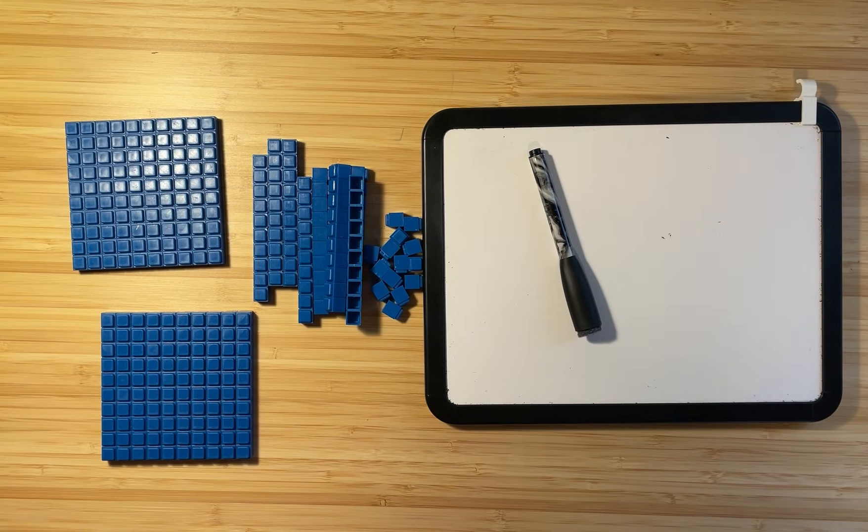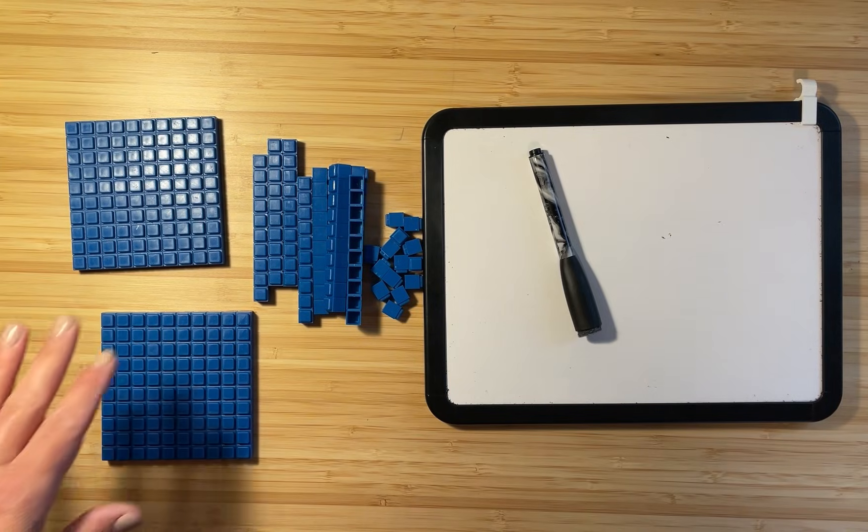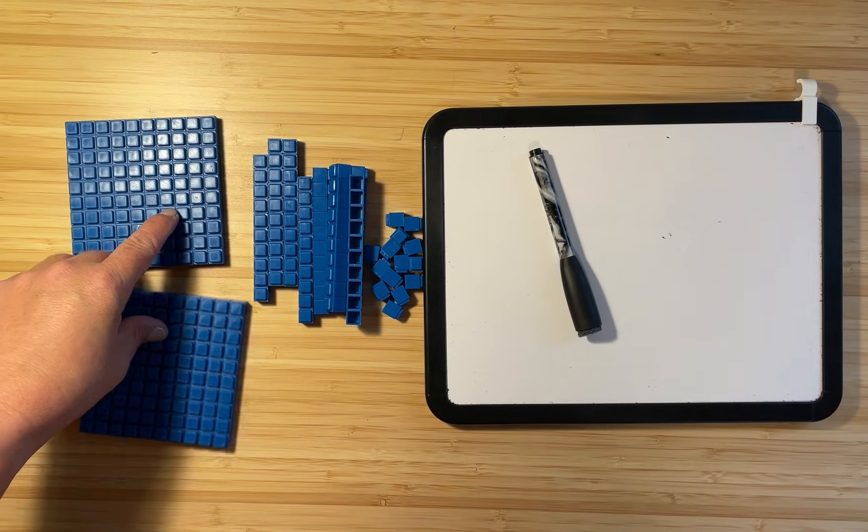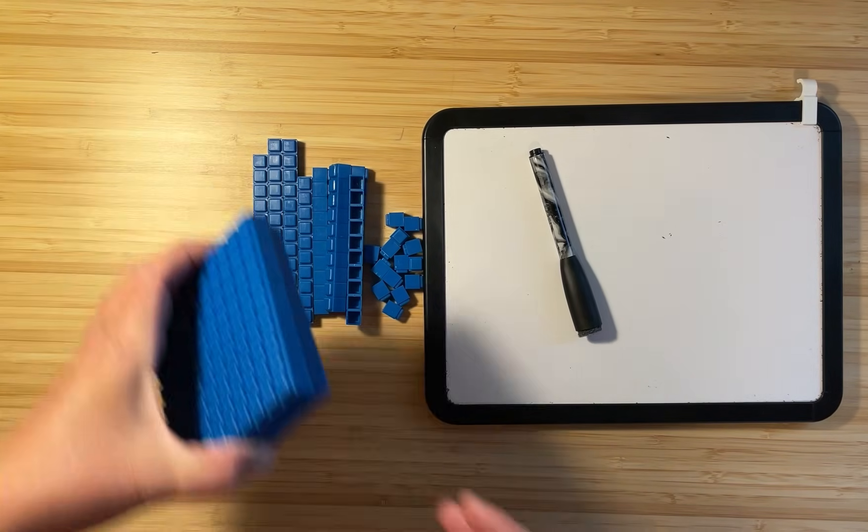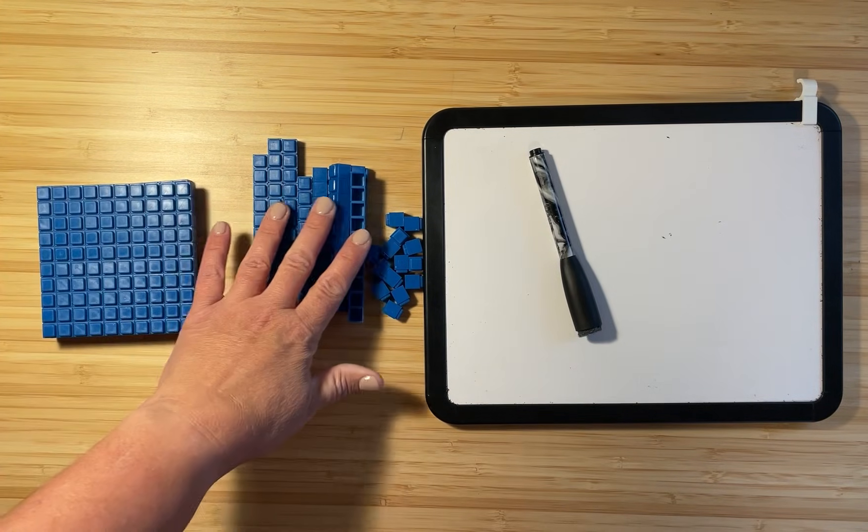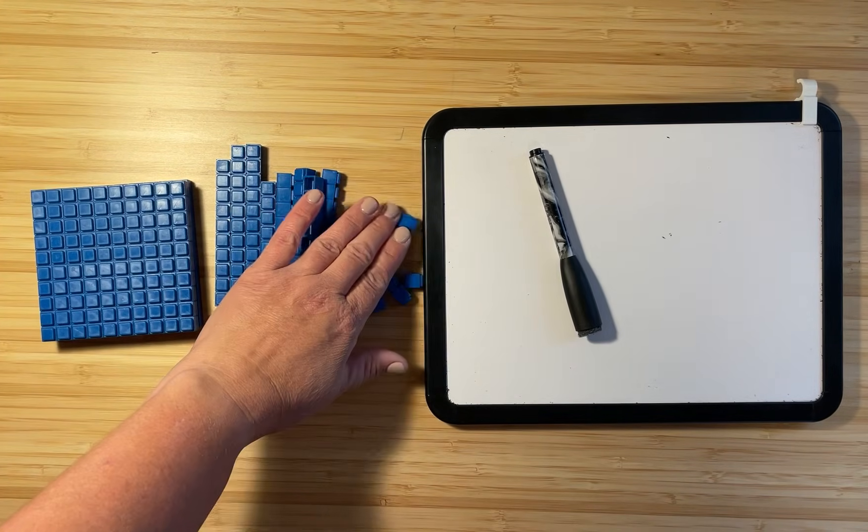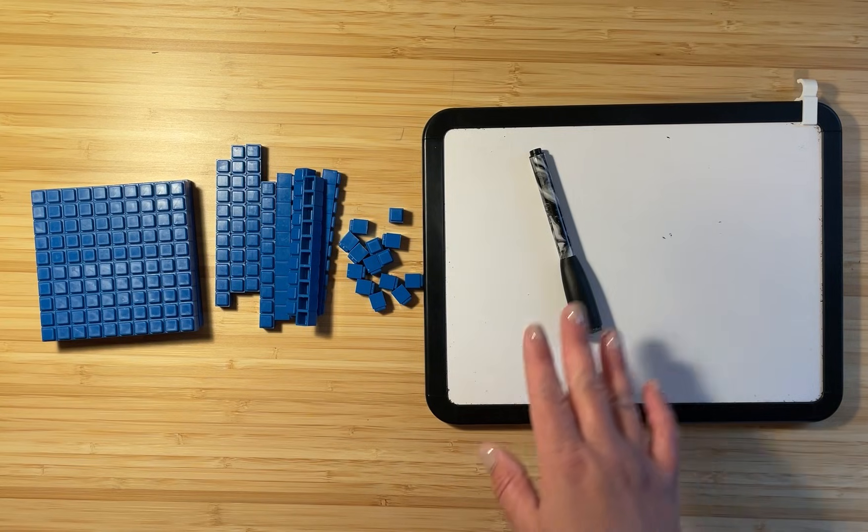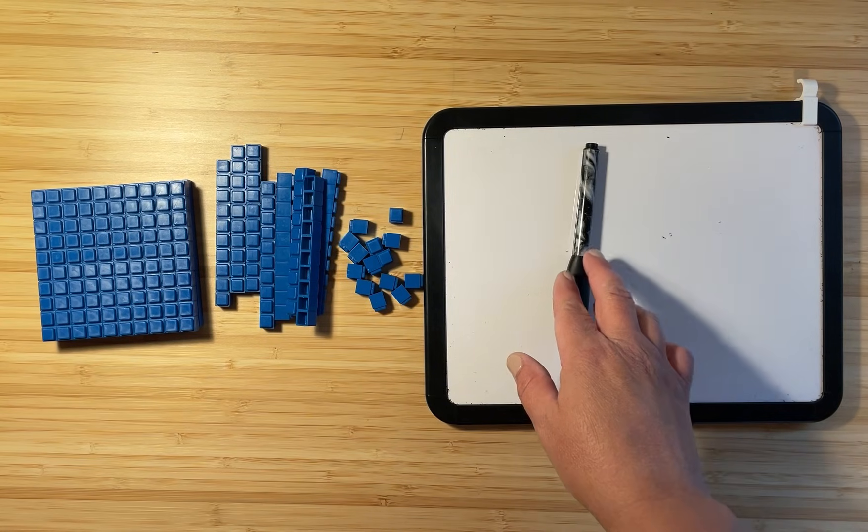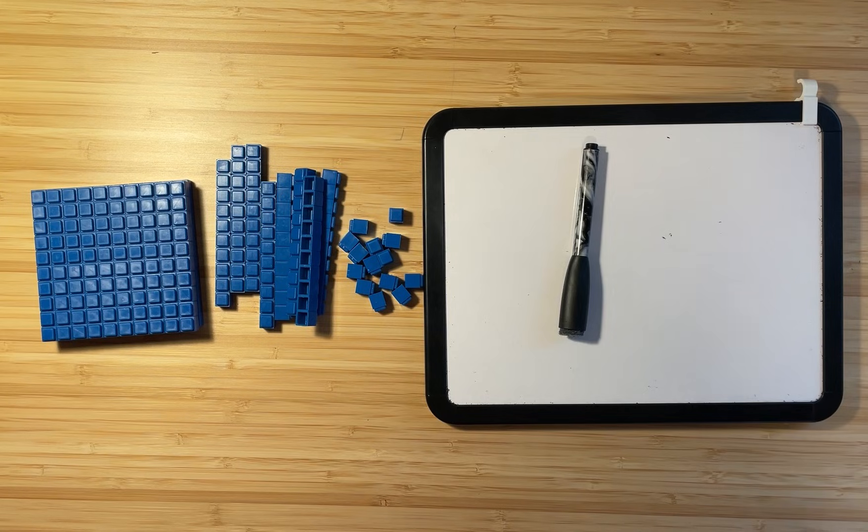For this lesson, you are going to need a few things so that you can do these activities right along with me. You are going to need some base 10 blocks: some hundreds, some tens, and some ones. You will also need a mini whiteboard and a dry erase marker, or even just a scrap piece of paper and a pencil will work just fine.